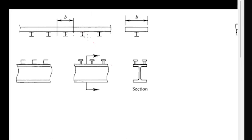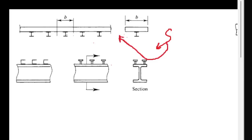Hello everyone. Today we are going to be talking about using Autodesk Robot in the design of composite steel structures — basically those things. This is an important step to cover before we dive into the full design of a steel structure, because if you have a residential structure or a high-rise building designed with steel structures, you would most probably have composite slabs being used.